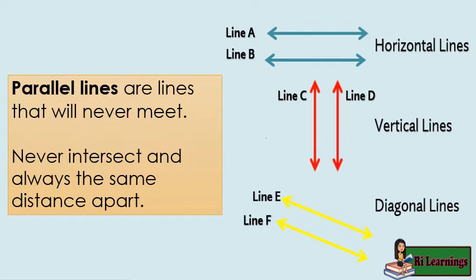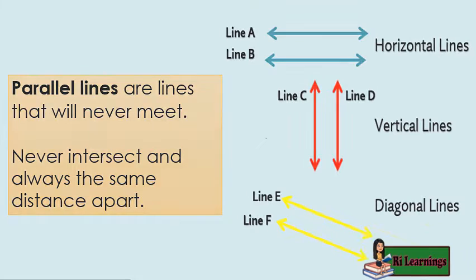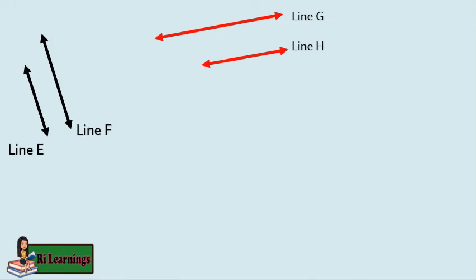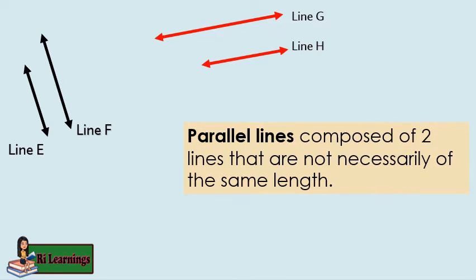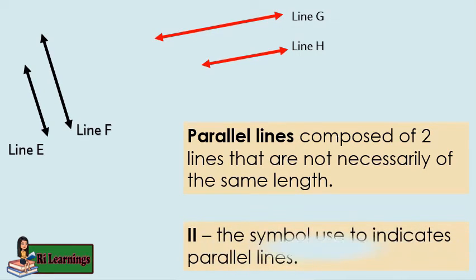Parallel lines are lines that will never meet, never intersect, and are always the same distance apart. Parallel lines are composed of two lines that are not necessarily of the same length. This is the symbol used to indicate parallel lines.